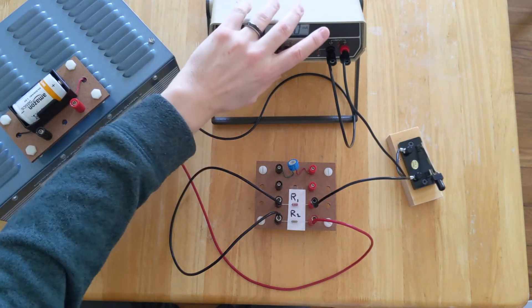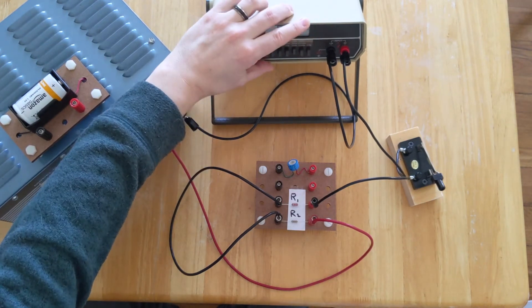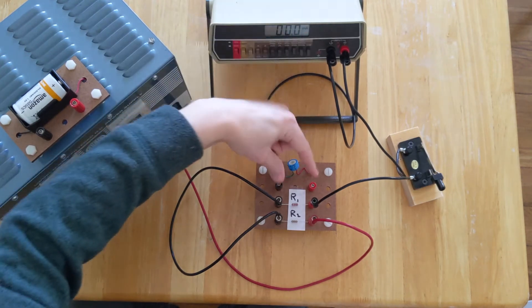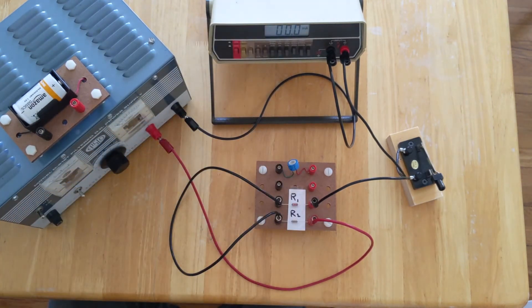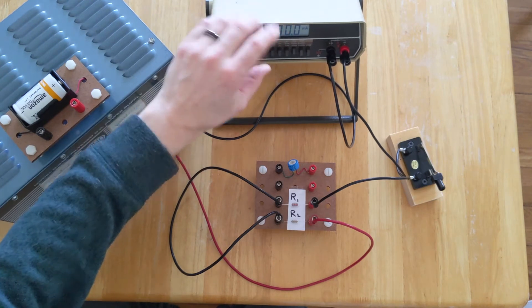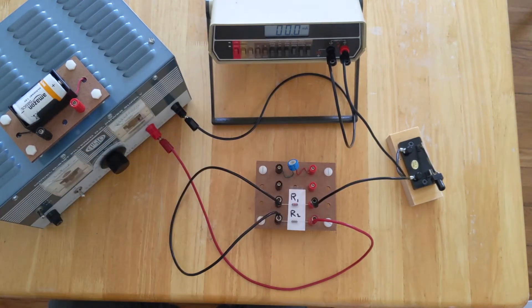I'd also like you to test the current through the entire circuit, which is what this is set up to do right now, and the current through resistor 1 and the current through resistor 2. You'll have to move this ammeter around in order to get those different measurements, but I know that you can do it.